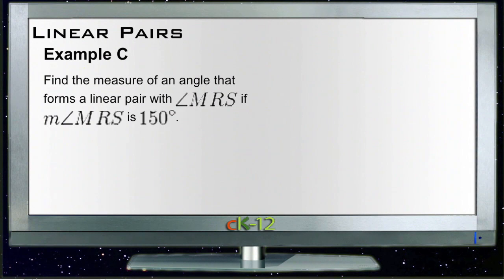Okay, let's take a look at Example C. Example C says find the measure of an angle that forms a linear pair with angle MRS if MRS is 150 degrees. So we have an angle and it's 150 degrees, so it's something like this.